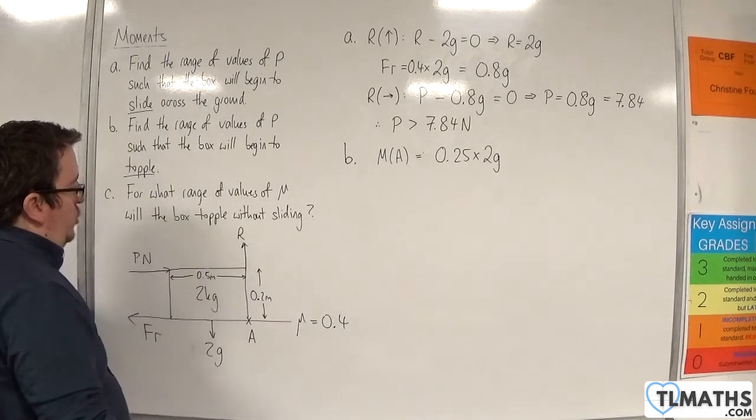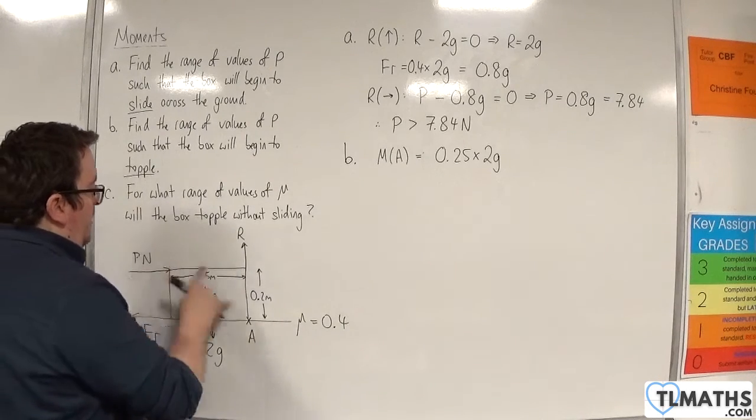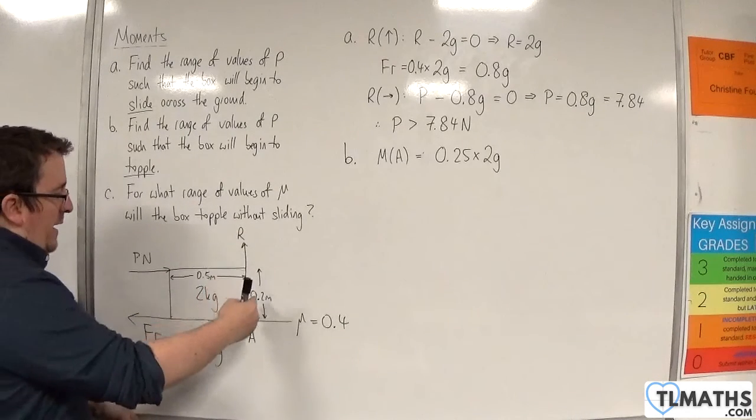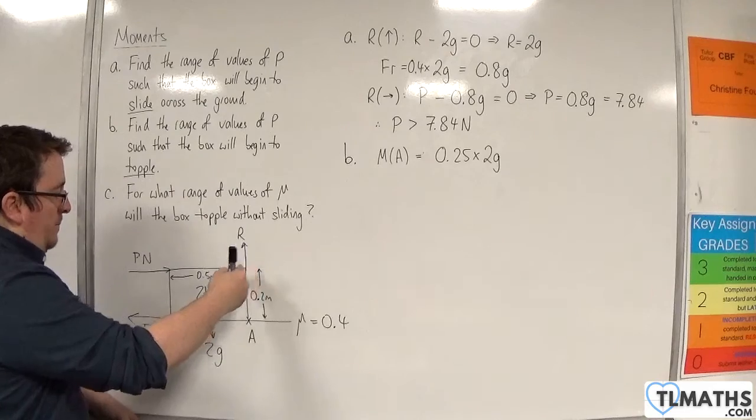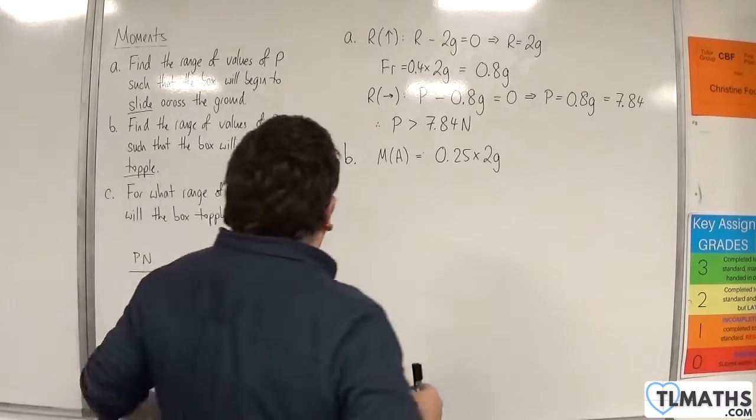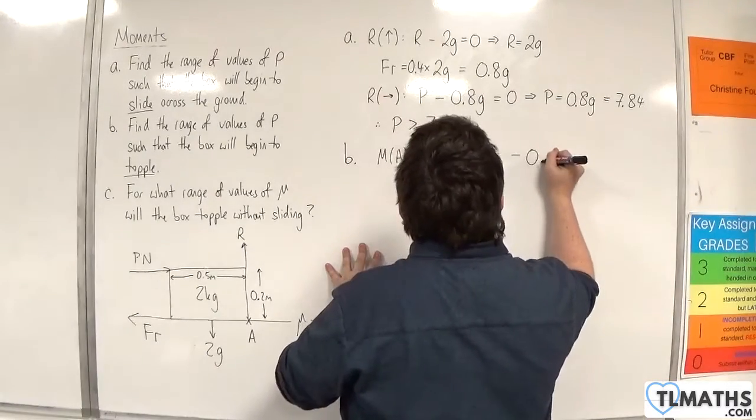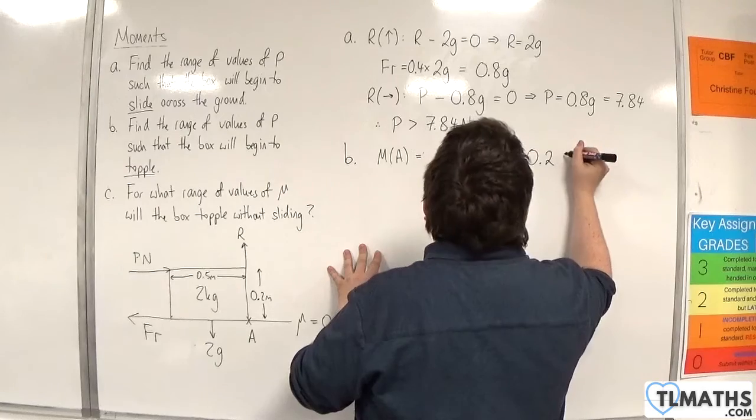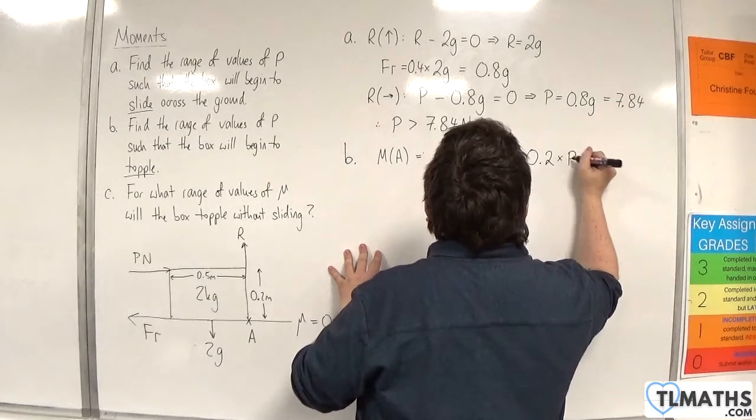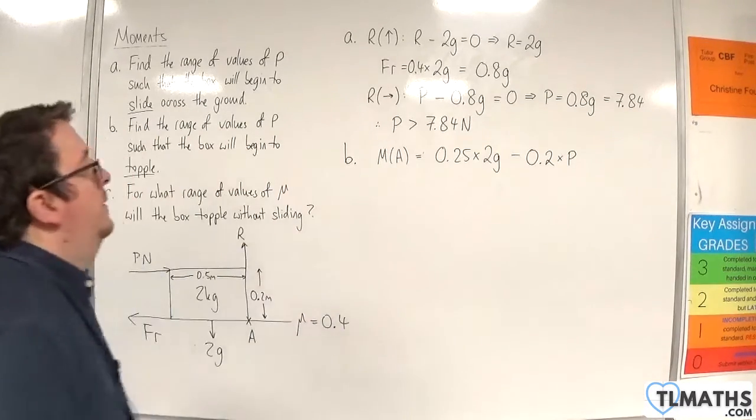We don't need to worry about the friction. We don't need to worry about the normal reaction. The only other force that we need to worry about is the p newton force, and that is 0.2 meters away. So that's going to go around the clockwise motion. So take away 0.2 times by p.